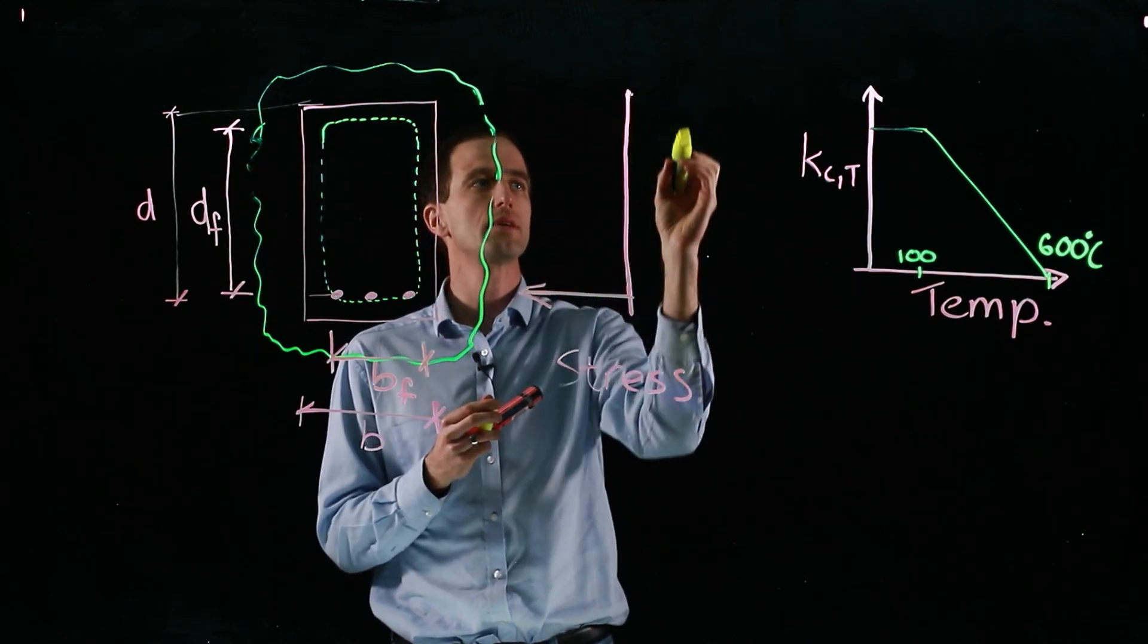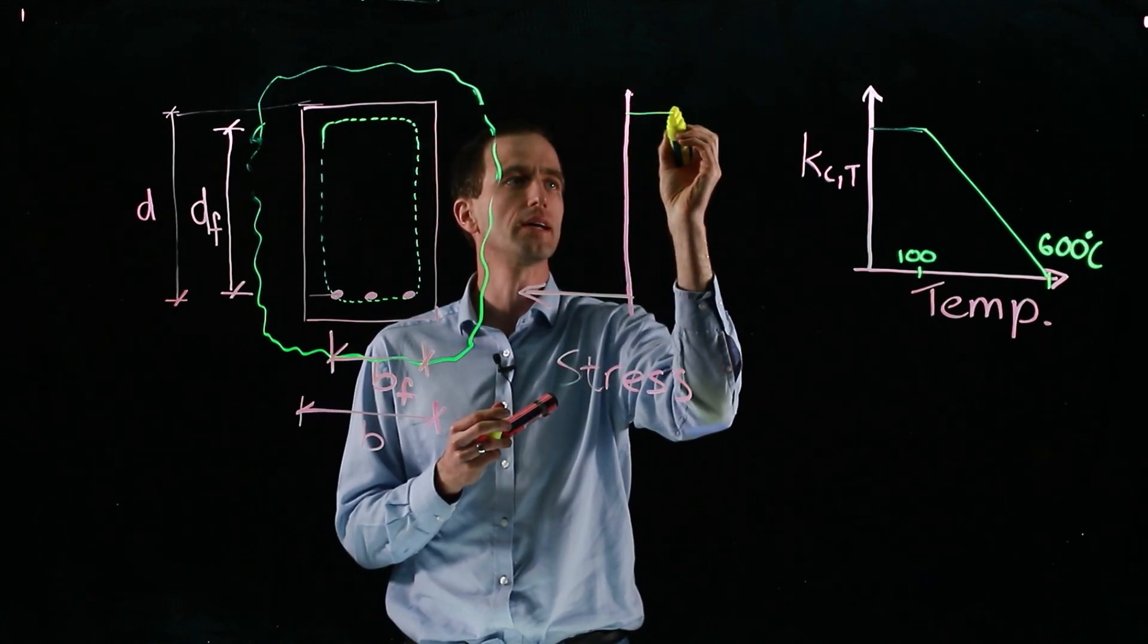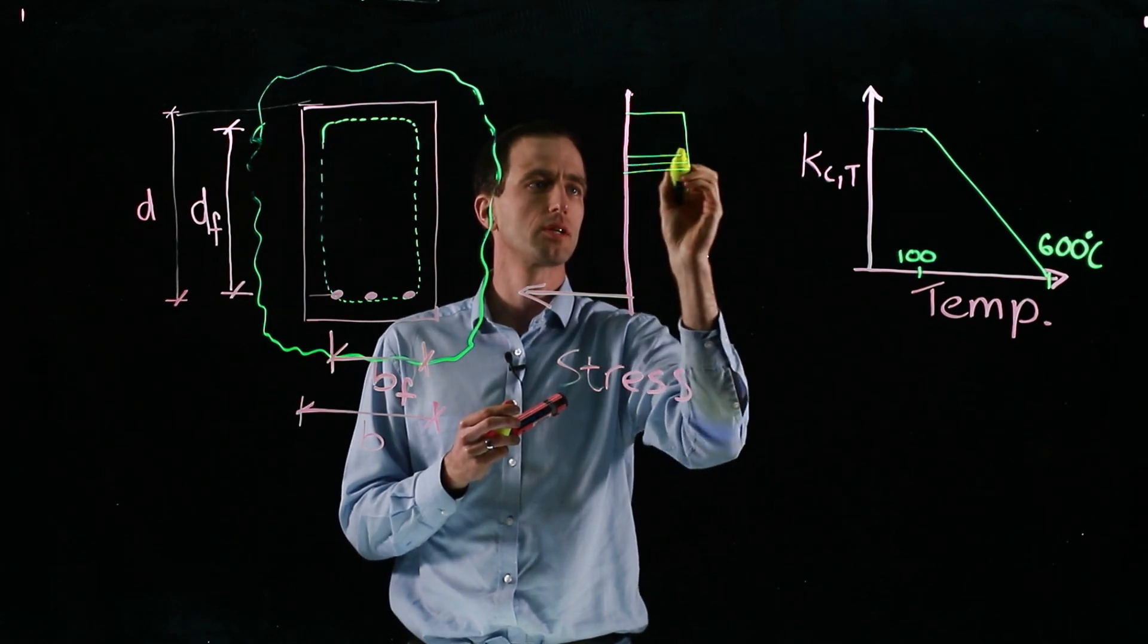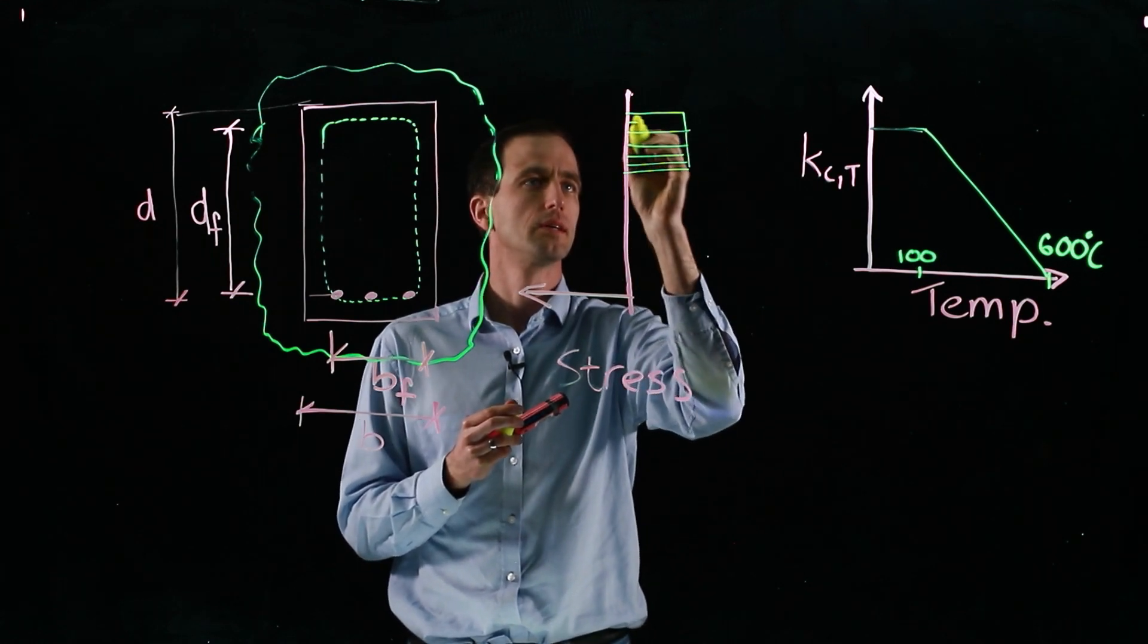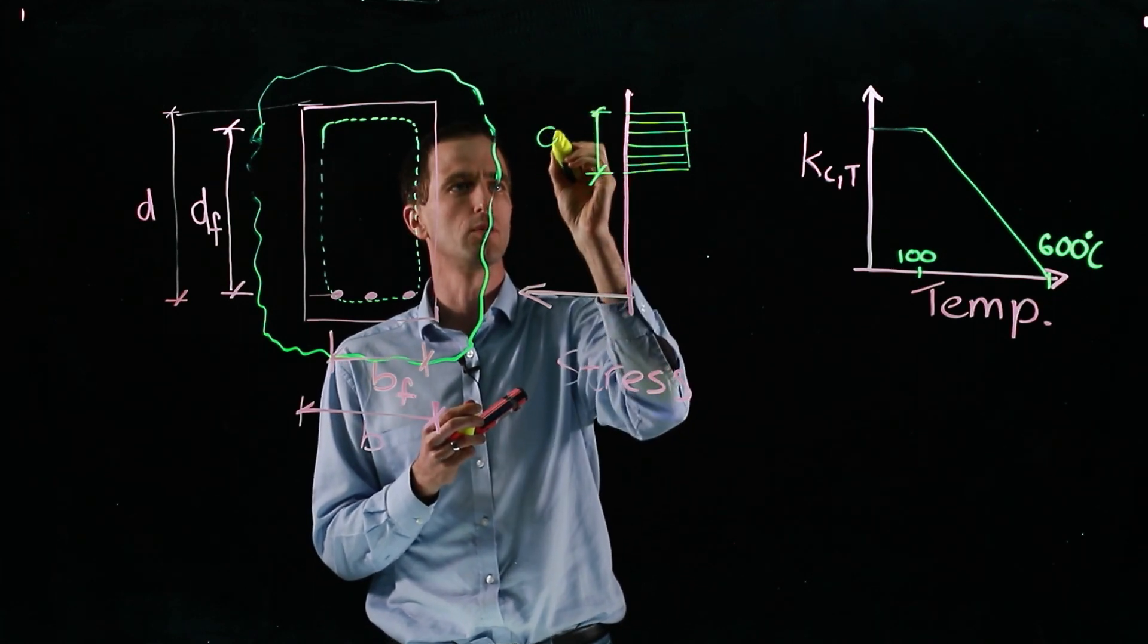On the other side, we're going to have our concrete going into compression. At ambient temperature, we'd have a block right up to the top, a compression block. But now that reduces in height. So we have a reduced compression block, and this is a depth which we're going to call AF.